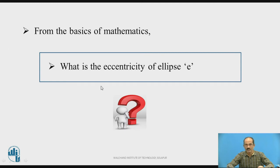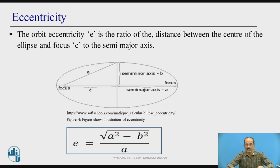From the basics of mathematics, we can define the eccentricity of an ellipse E. The eccentricity E of an ellipse is defined as the ratio of the distance between the center of the ellipse and the focus C, to the semi-major axis A. You can see this ellipse has one focus and a center; the distance between these two is C, and the semi-major axis is A. So the ratio C divided by A gives the eccentricity. Eccentricity can be calculated as E equals the square root of (a² minus b²) divided by A.